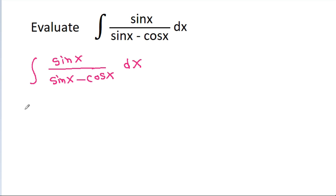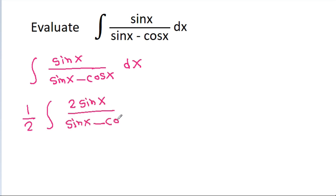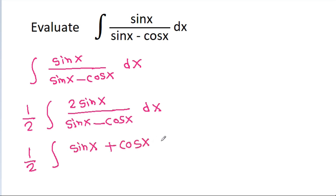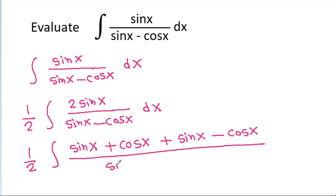This will be equal to 1/2 times the integral of 2sin(x) divided by (sin(x) minus cos(x)) dx. And 2sin(x) can be written as (sin(x) + cos(x)) + (sin(x) - cos(x)), since cos(x) will get cancelled and sin(x) + sin(x) will be 2sin(x), all divided by (sin(x) minus cos(x)) dx.